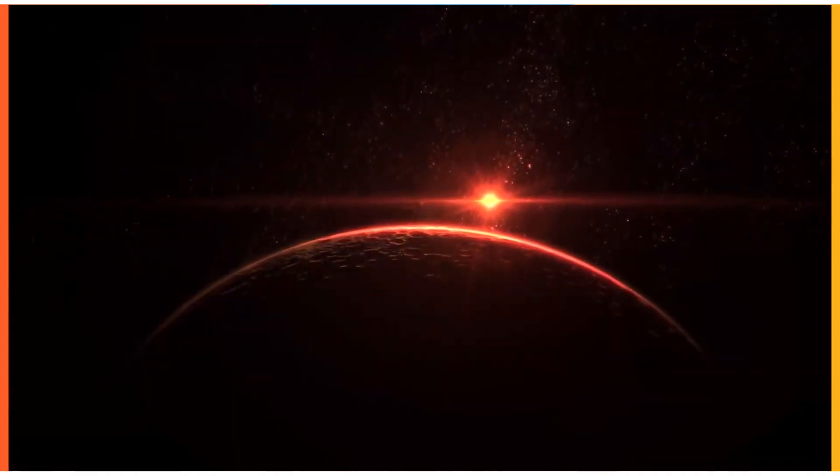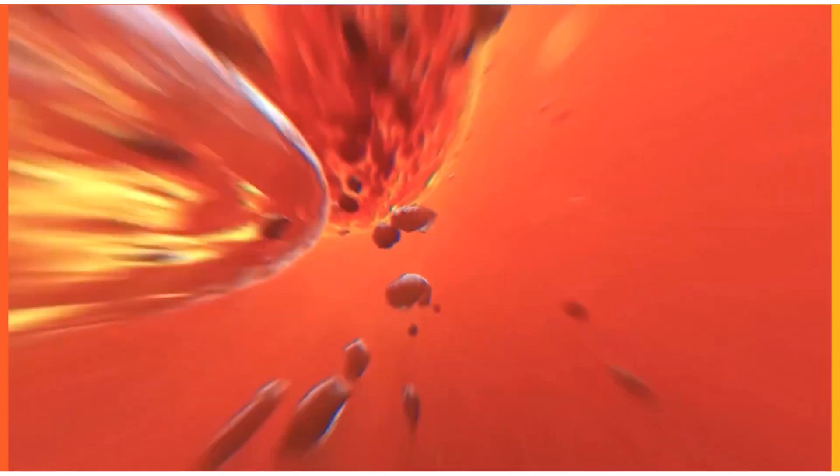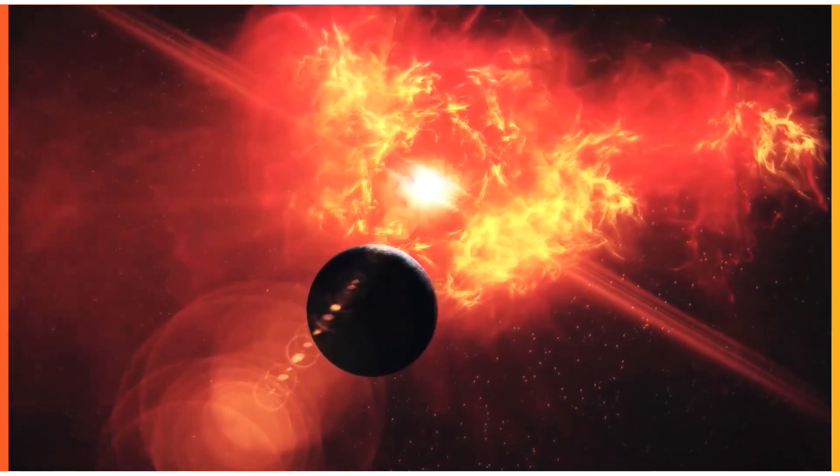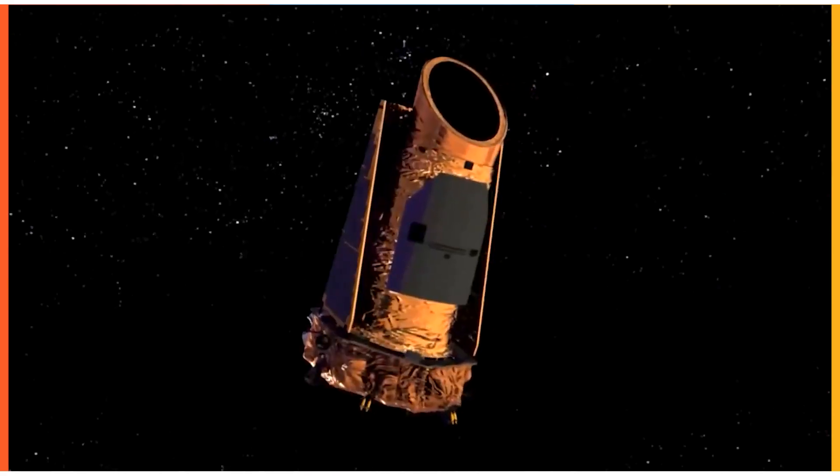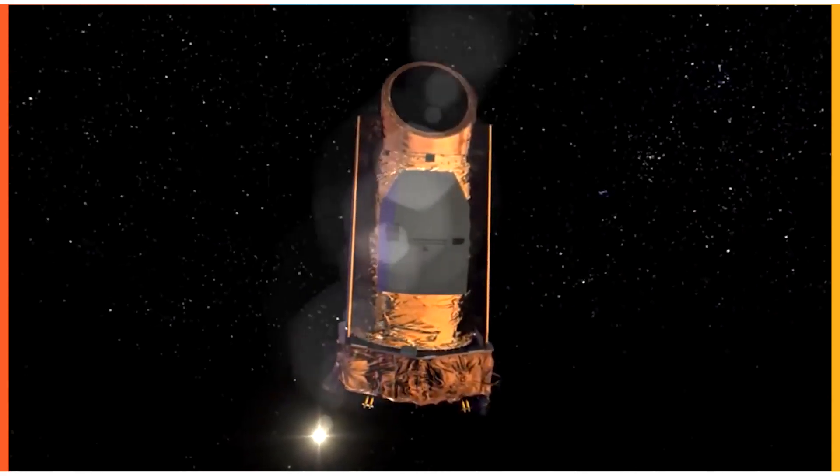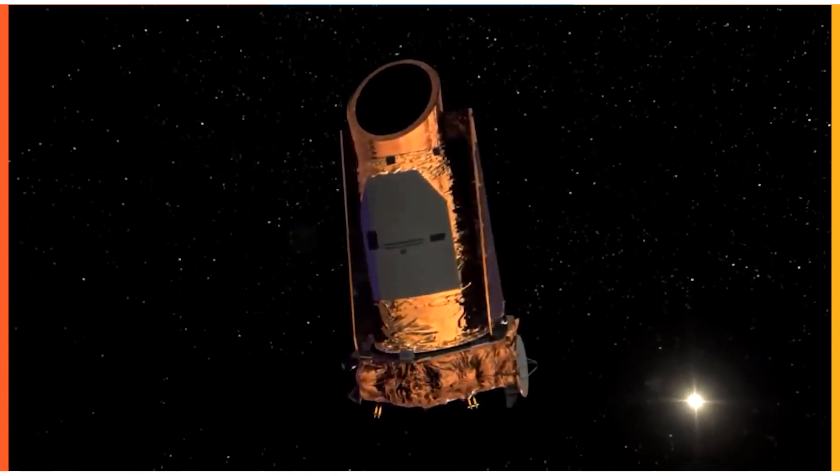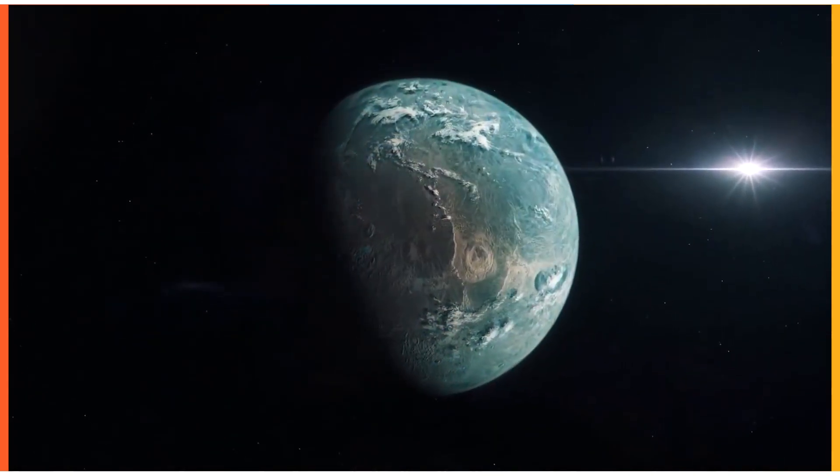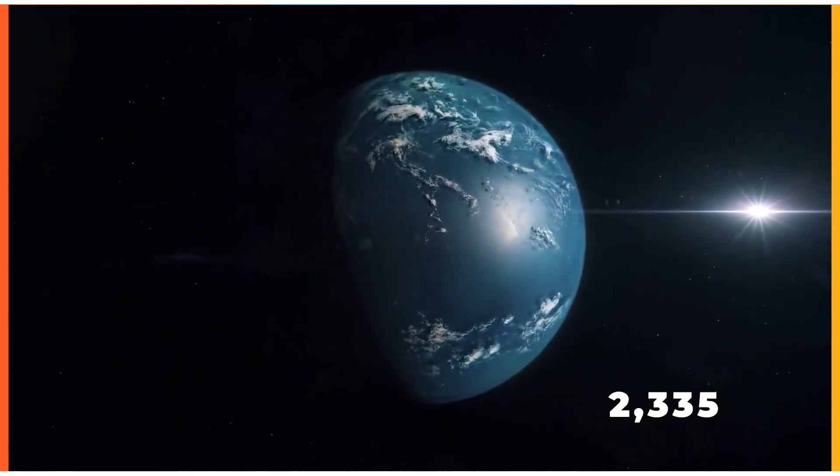NASA published two dozen news releases reporting newly found exoplanets, typically in huge batches, throughout the first seven years of Kepler and K2 operations. The final data from Kepler's main mission was released in June 2017. The number of verified planetary discoveries made by Kepler has been increased to 2,335.